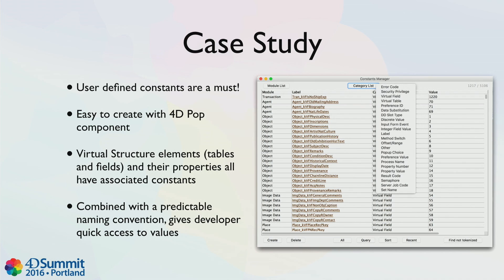At the museum, user-defined constants are a must. They're really easy to create with the 4DPOP component. All of the virtual structure elements — the tables and fields and their properties, like their name — all have an associated constant. If you put it together with a predictable naming convention — for example, our fields are prefixed by their module, their table, agent, virtual field, and then their name — it can be really easy. You can use auto-complete, and it's a lot more readable than having a field number or something like that.